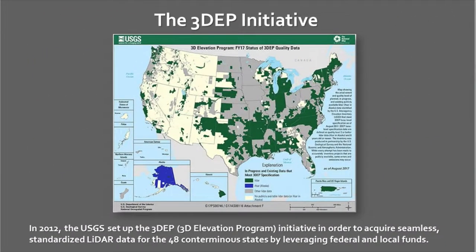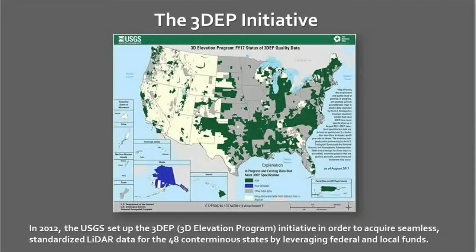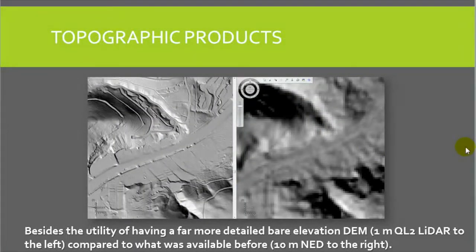In recent years, LIDAR mapping, or laser mapping as it's otherwise known, has become much more available. In this graphic from the USGS circa January 2018, you see everything in green where there are areas that have been covered by large-scale LIDAR mapping projects. This data provides one-meter spatial resolution digital elevation models, as you can see to the left. This compares favorably to what we see on the right, which is the old digital elevation model.